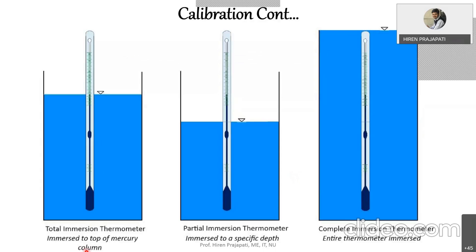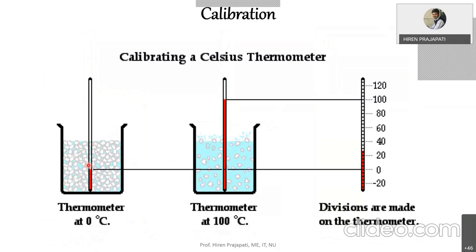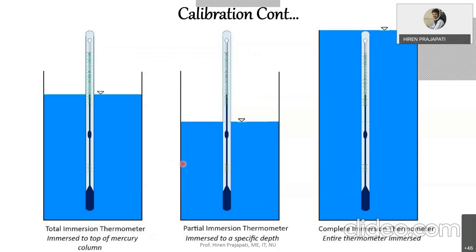The three types of thermometers based on calibration conditions are: total immersion, partial immersion, and complete immersion. For total immersion, you immerse the thermometer up to the top of the mercury column — meaning the mercury column is entirely within the medium whose temperature you want to measure.